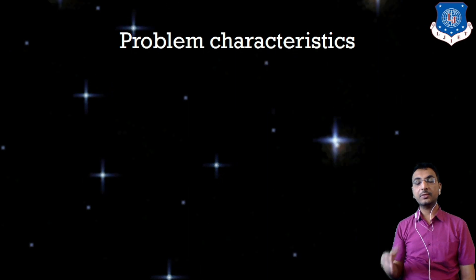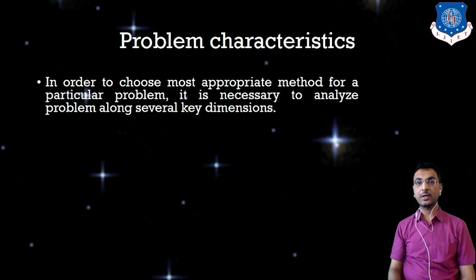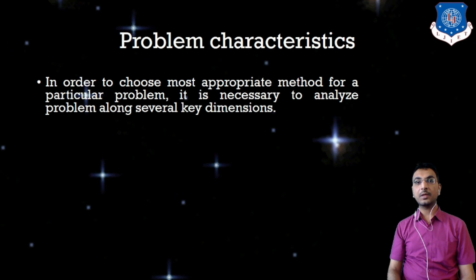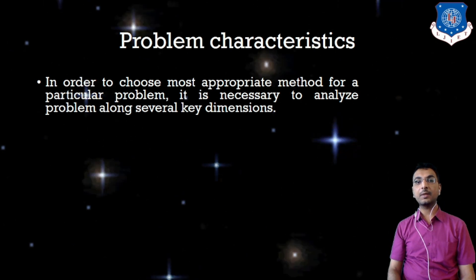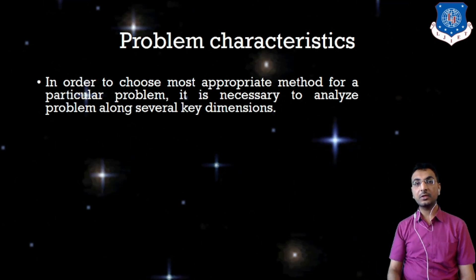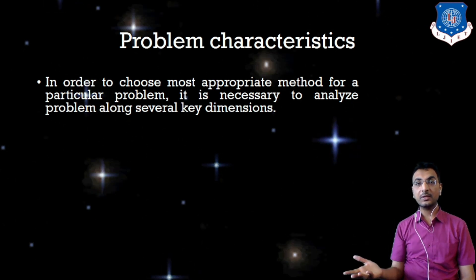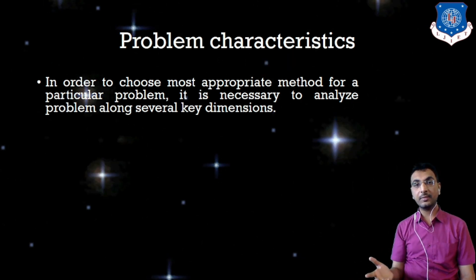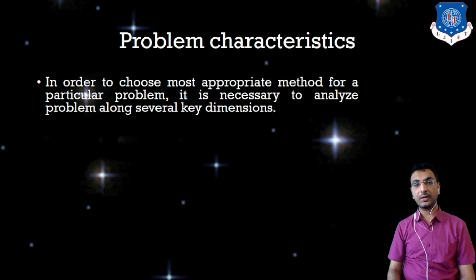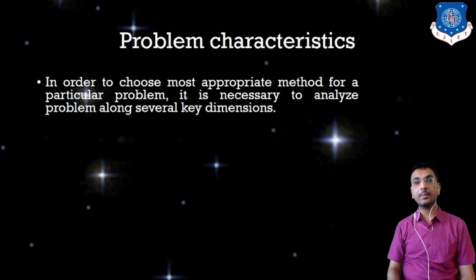Problem characteristics means which type of problem we are going to understand in Artificial Intelligence. In order to choose the most appropriate method for a particular problem, it is necessary to analyze the problem along several key dimensions. The problem may be recoverable, ignorable, or have ignorable steps. We are going to study these characteristics in two parts.